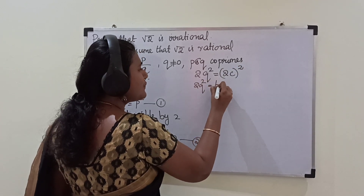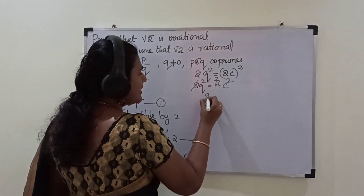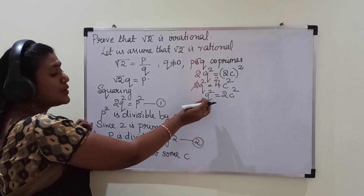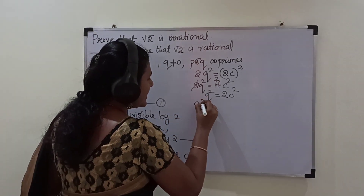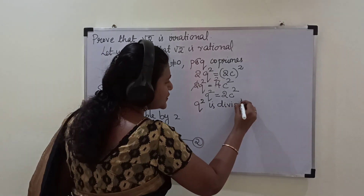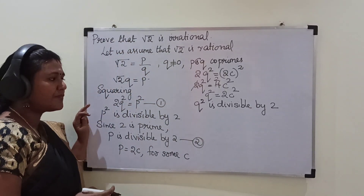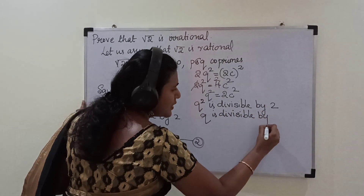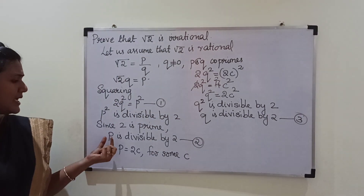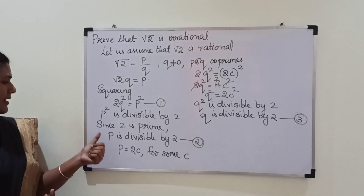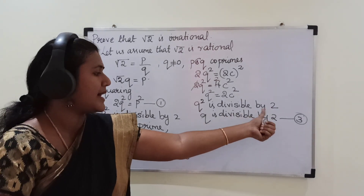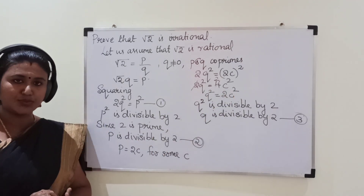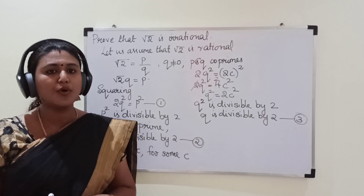Cancelling, we get q² = 2c². From this equation it is clear that q² is divisible by 2. Again, since 2 is prime, we can say q is divisible by 2. Now from these two statements — p is divisible by 2 and q is divisible by 2 — it is clear that p and q are both divisible by 2, meaning 2 is a common factor of both p and q.